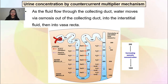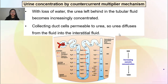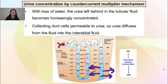As the fluid flows through the collecting duct, water moves via osmosis out of the collecting duct into the interstitial fluid and then into the vasa recta. Air mengalir keluar melalui osmosis dan masuk dalam interstitial fluid, kemudian ke dalam vasa recta. With the loss of water, the urea left behind in the tubular fluid becomes increasingly concentrated dalam tubular fluid ataupun cecair dalam collecting duct. Since the collecting ducts are permeable to urea, urea diffuses out from the fluid into the interstitial fluid.